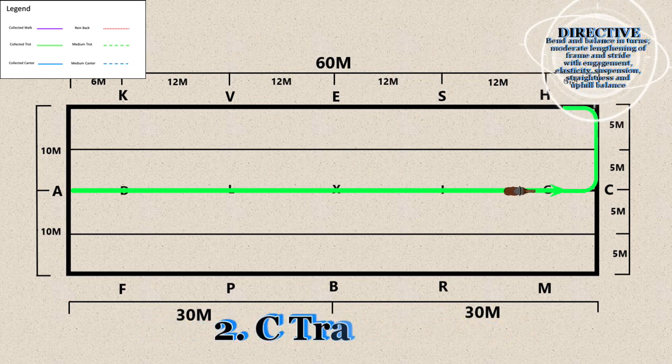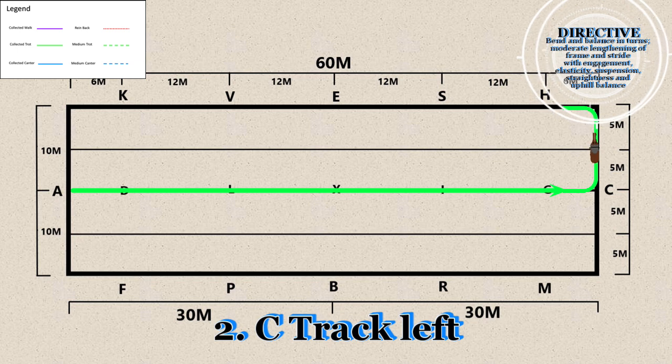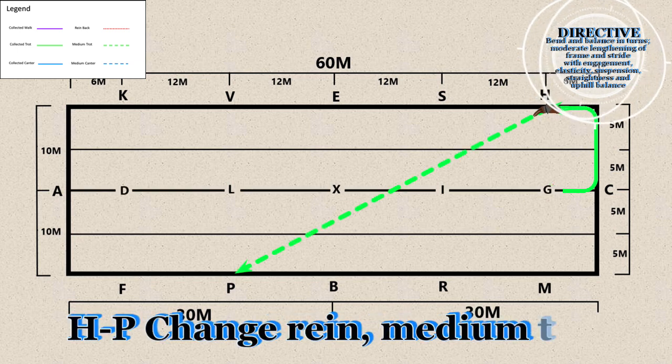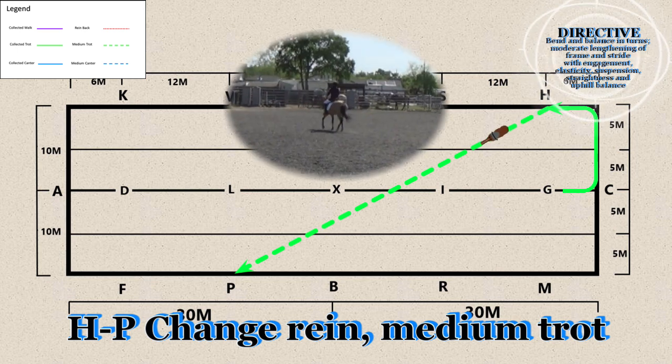2. C - Track left. H through P - Change rein, medium trot.